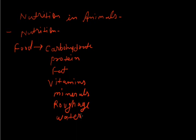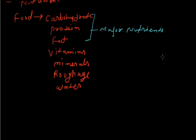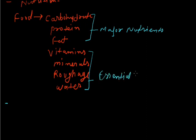These are the seven major components of food. The first three — carbohydrate, protein, and fat — are known as major nutrients because they provide us energy. The remaining four — vitamins, minerals, roughage, and water — are not energy-giving compounds; they are essential parts of body functioning.